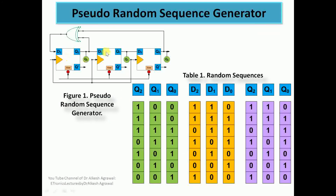Initially we start with the seed 100, so Q2 is 1, Q1 is 0, and Q0 is 0. Q2 which is 1 and Q0 which is 0 go into the exclusive-OR gate, giving XOR output 1, which goes to D2. D1 is 1 because D1 is connected to Q2 whose previous output is 1, and D0 is 0 because it is connected to Q1. So before the clock we have input condition 110, and after the clock the output is 110. From 100, the next state is 110.